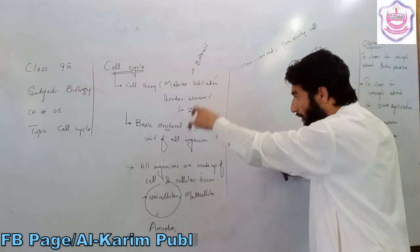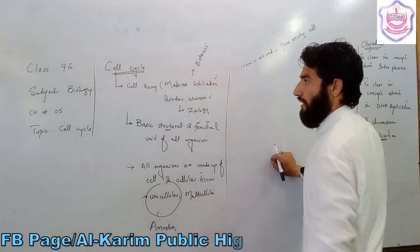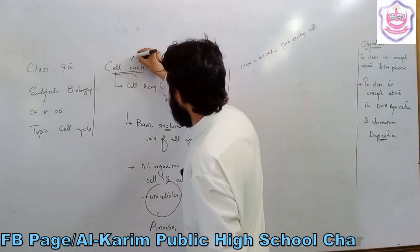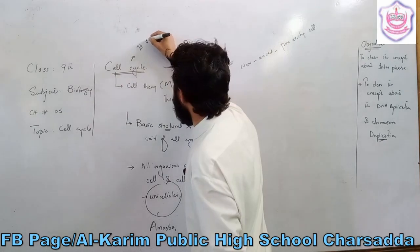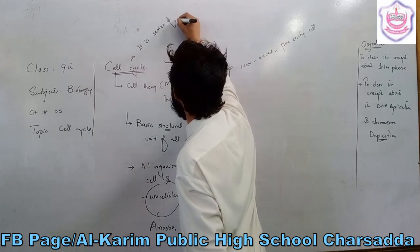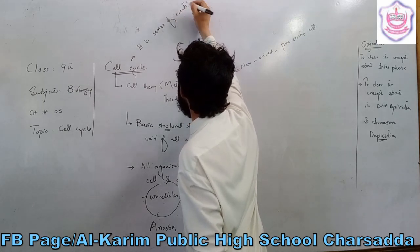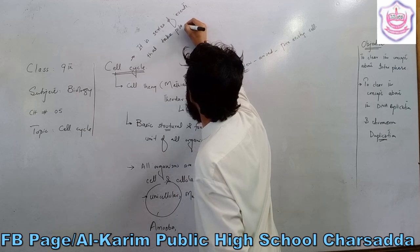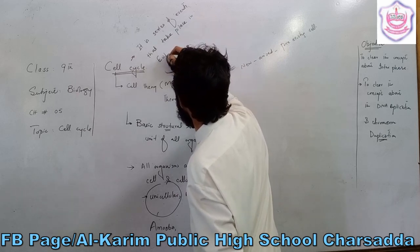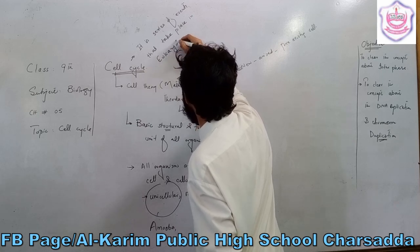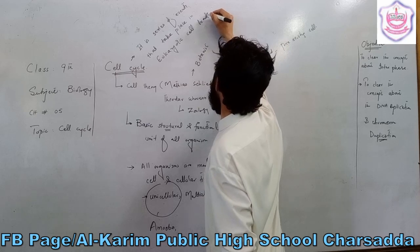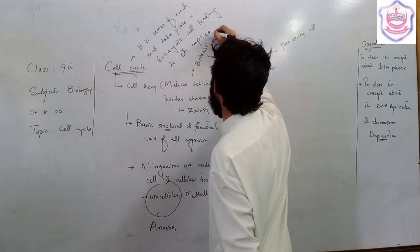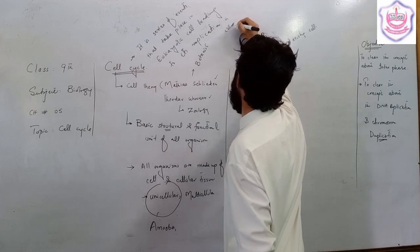The main points of the cell theory are the best way to define a cell. Now, what is the cell cycle? It is a series of events that take place in a eukaryotic cell, leading to its replication. It is called the cell cycle.